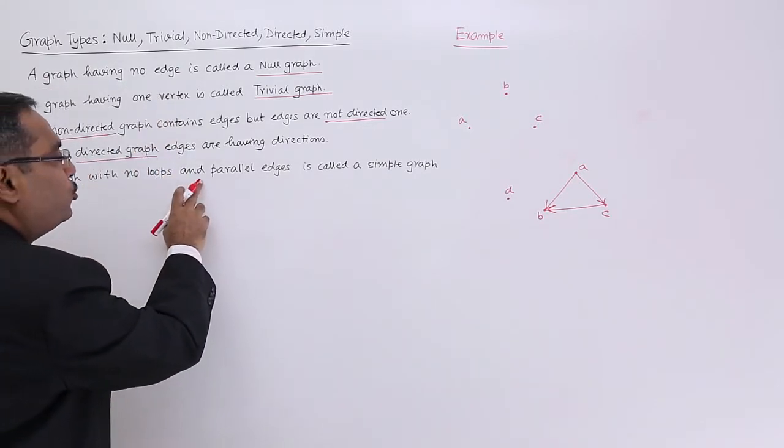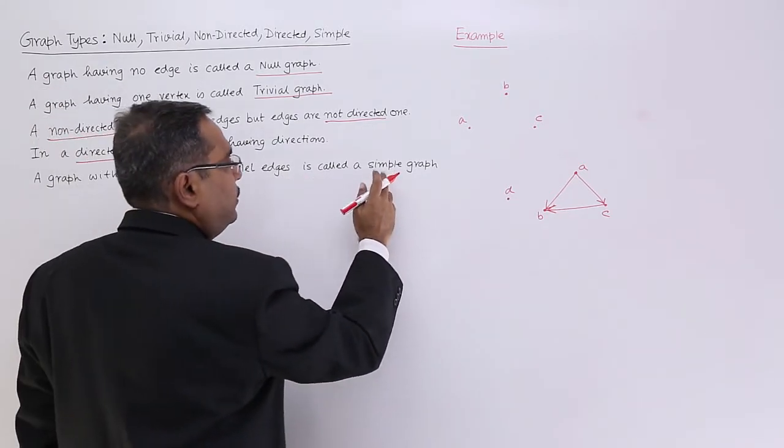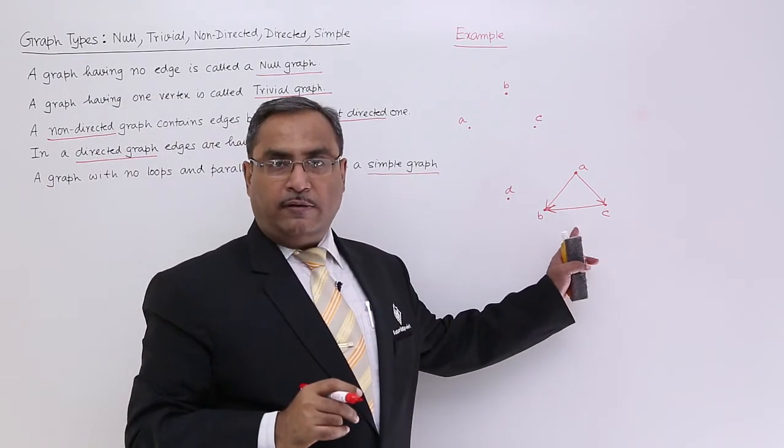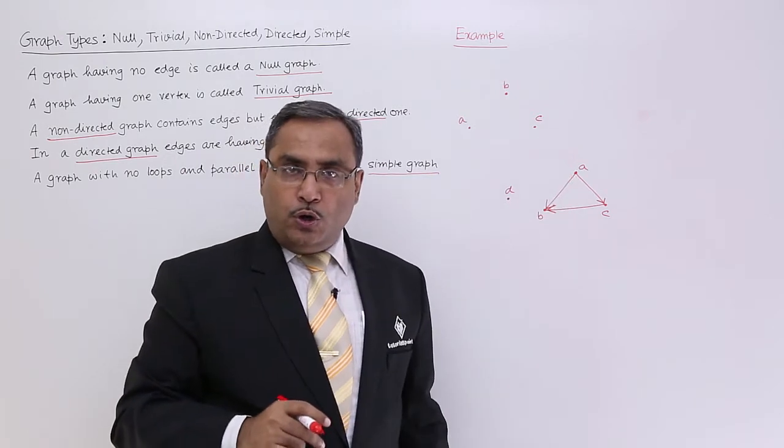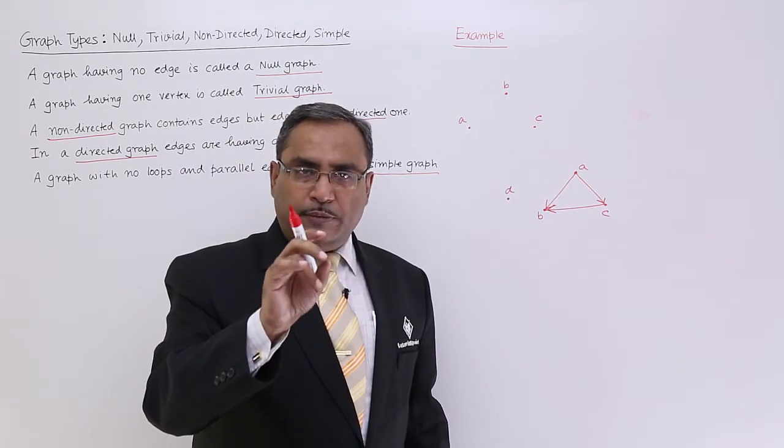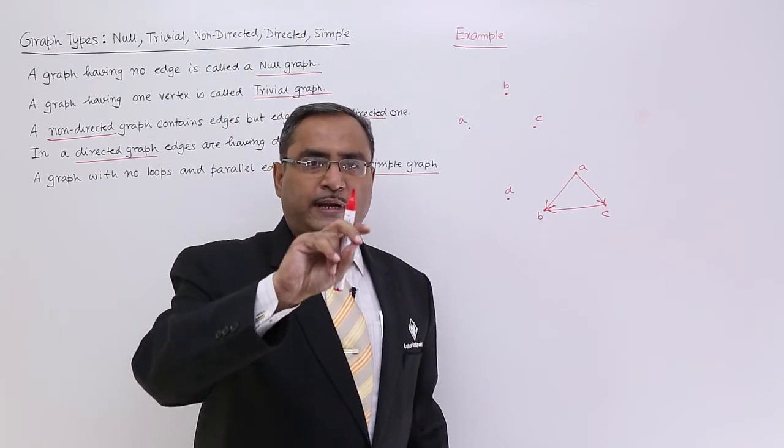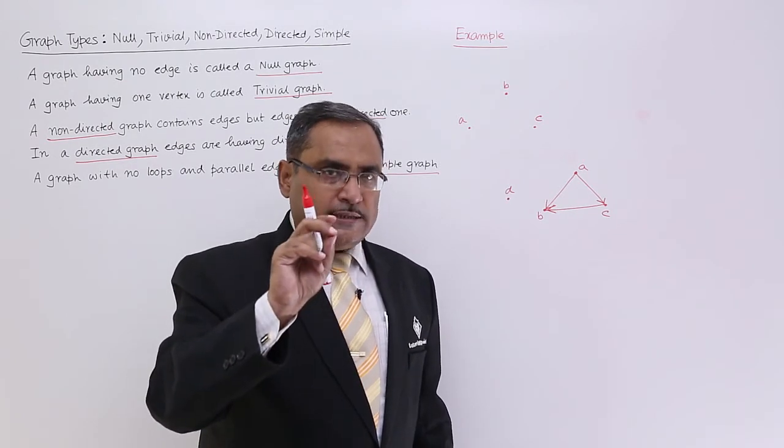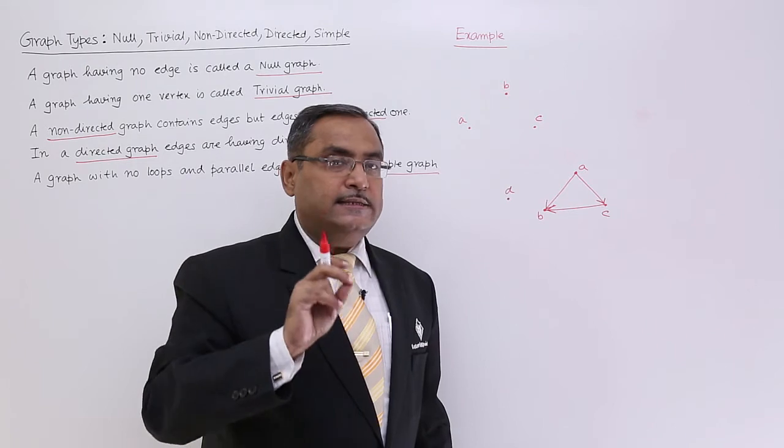A graph with no loops and parallel edges is called a simple graph. This is a simple graph because it does not have any loop. A loop means one edge which has the same vertex attached twice as the end vertices.